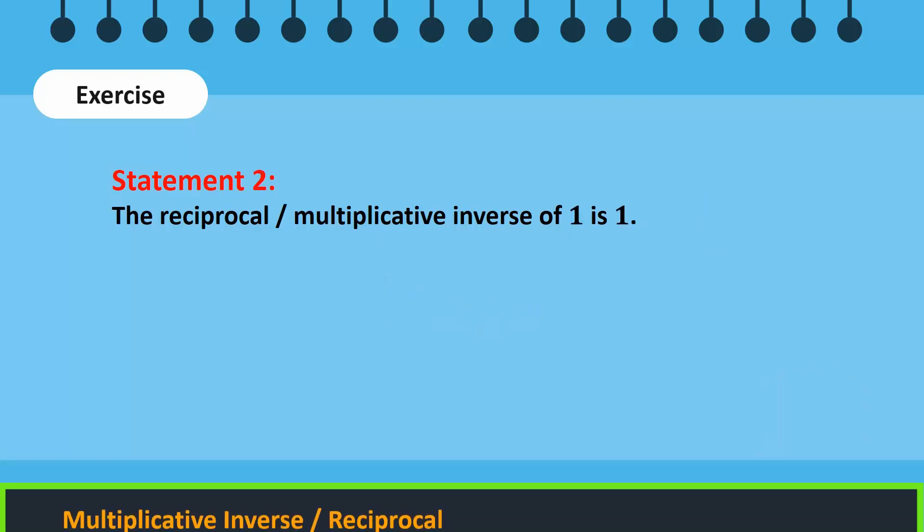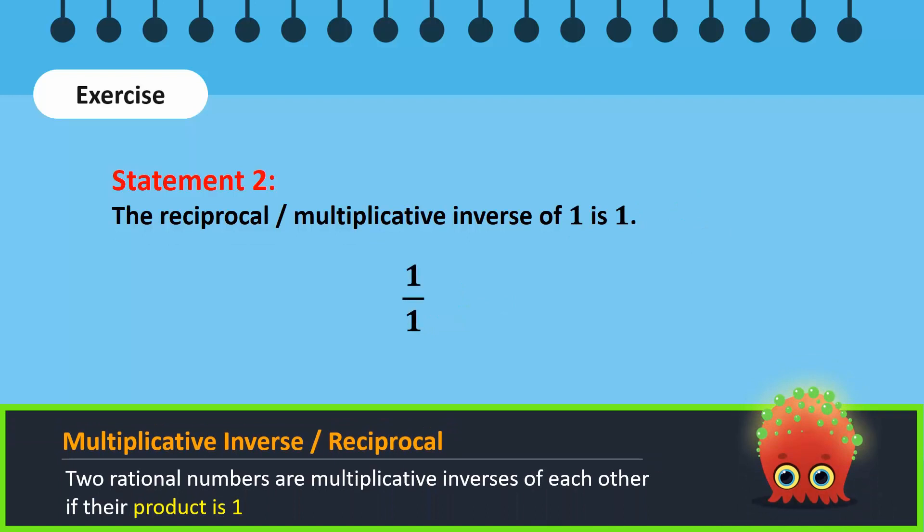To find the reciprocal of a number, we usually turn it upside down. The reciprocal of 1 is 1, which can be confirmed by taking their product, which is also 1. So, this statement is true.